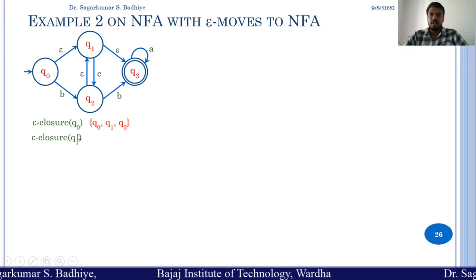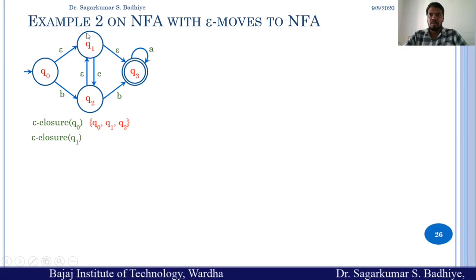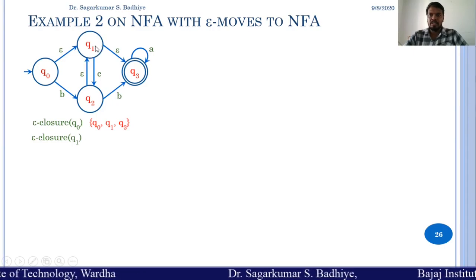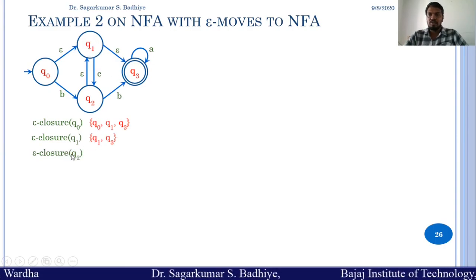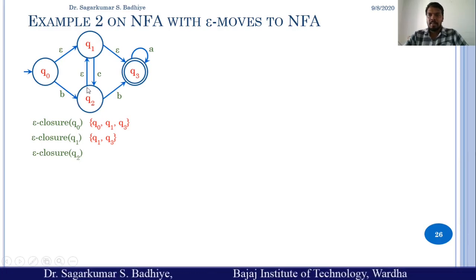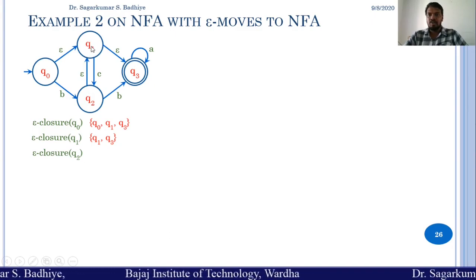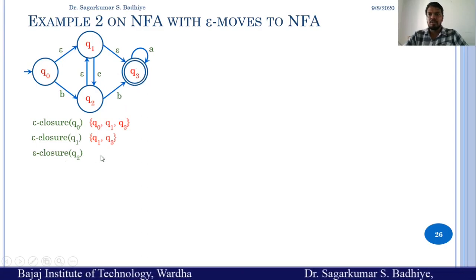Epsilon closure of Q1 is the set of all states reachable from Q1 by reading epsilon. It will be Q1, and since there is a transition from Q1 to Q3, Q3 is included. So Q1 and Q3 will be the epsilon closure of Q1. Epsilon closure of Q2 consists of Q2, and since there is an epsilon transition from Q2 to Q1, and from Q1 to Q3, epsilon closure of Q2 will be Q1, Q2, and Q3.